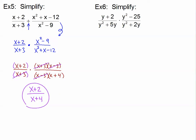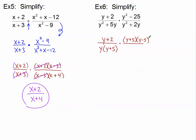The next example is a multiplication, so no reciprocal needed — we go straight to factoring. y plus 2 in the numerator stays as is. The denominator has a GCF of y, so I pull out y and I'm left with y times the quantity y plus 5. The next numerator is y squared minus 25 — difference of two perfect squares — which factors into y plus 5 times y minus 5. The final denominator has a GCF of y, giving y times the quantity y plus 2. You must factor everything before canceling.